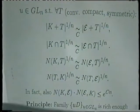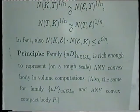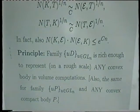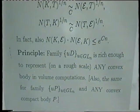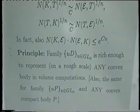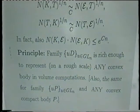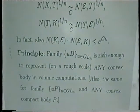So from the point of view of volume and covering geometry, any K looks like an ellipsoid. The principle is that the family GL_N is rich enough to represent any convex body in all volume or covering computations. This ellipsoid family has nothing specific — I could start with any body, say the cube, consider its linear images, and this would be equally sufficient. The point is that in very high dimension, there is not so much diversity as one could think, but only when we take the isomorphic point of view — doing things up to a universal constant.